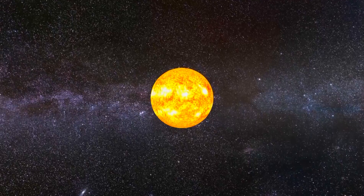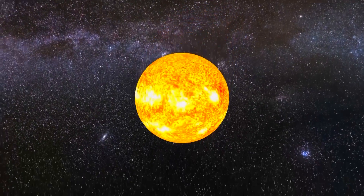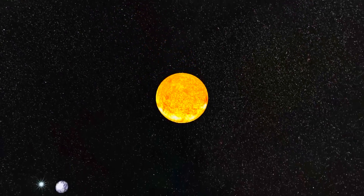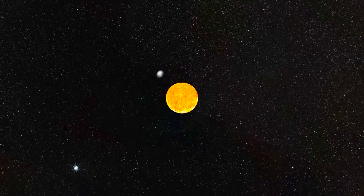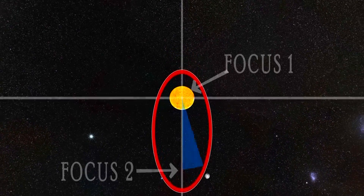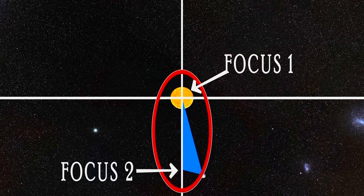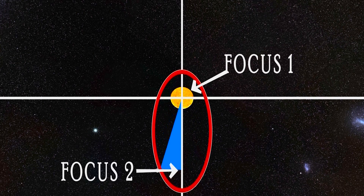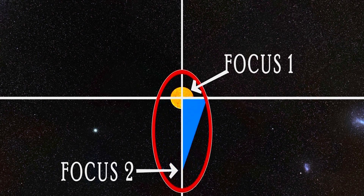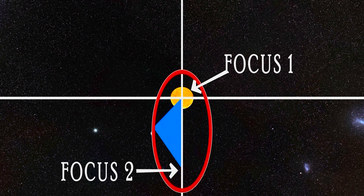So the first law: the orbit of a planet is an ellipse with the sun at one of the two foci. Every ellipse has two focuses, or foci, as Latin is pretentious. If you draw a line from these two foci to a point on the ellipse, those two lines will always add up to the same length no matter where you choose the point. The Earth has the sun as one of the two foci, and because our orbit is pretty circular, those foci are quite close together.